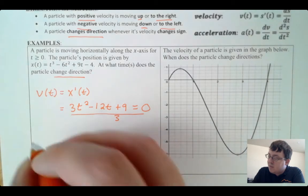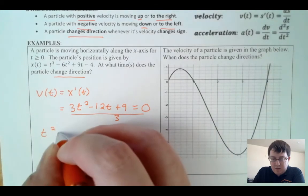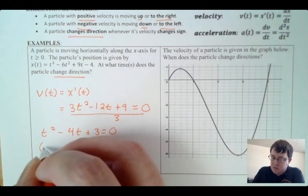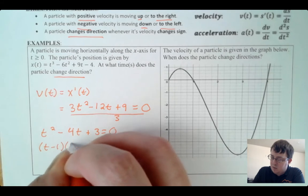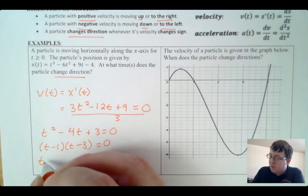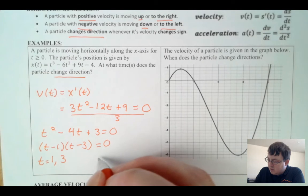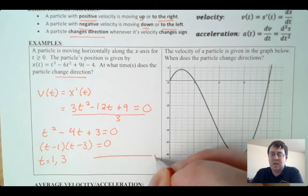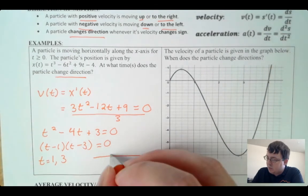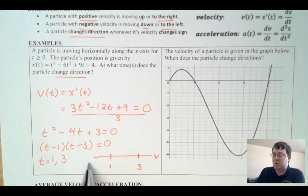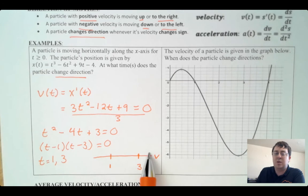To solve this quadratic, I'll divide everything by three to make factoring easier, giving t² − 4t + 3 = 0, which factors as (t − 1)(t − 3) = 0. So there are two values to look at: t = 1 and t = 3. Those are the places where velocity equals zero. I'll set up a number line with 1 and 3 marked, and examine what's happening in each of the three intervals — to the left of 1, between 1 and 3, and greater than 3.